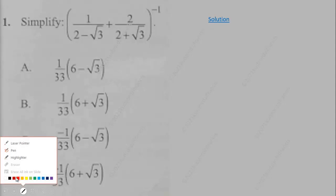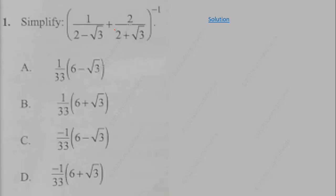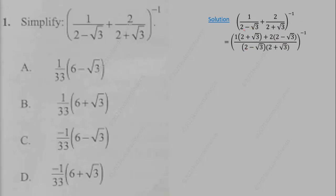We begin with question 1: simplify 1 over (2 minus √3) plus 2 over (2 minus √3). We need to find the LCM, which is the product of the denominators.